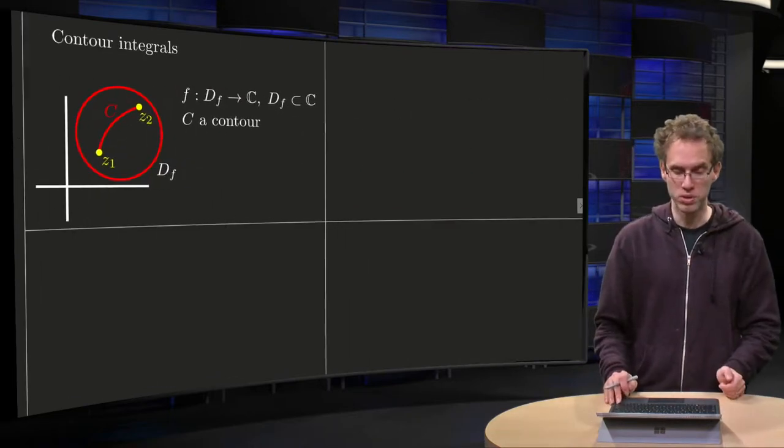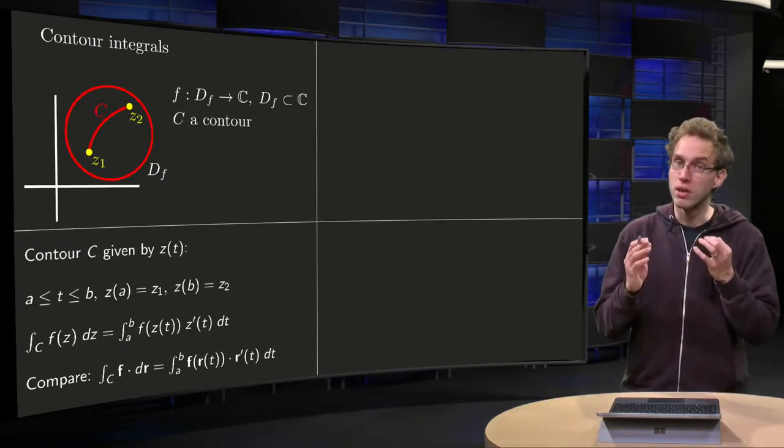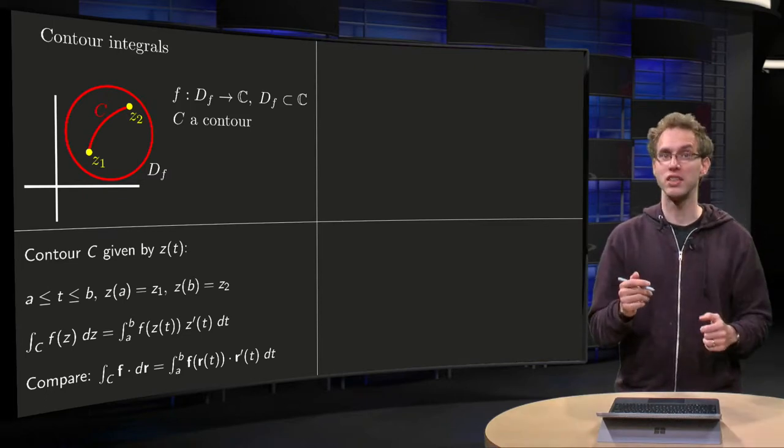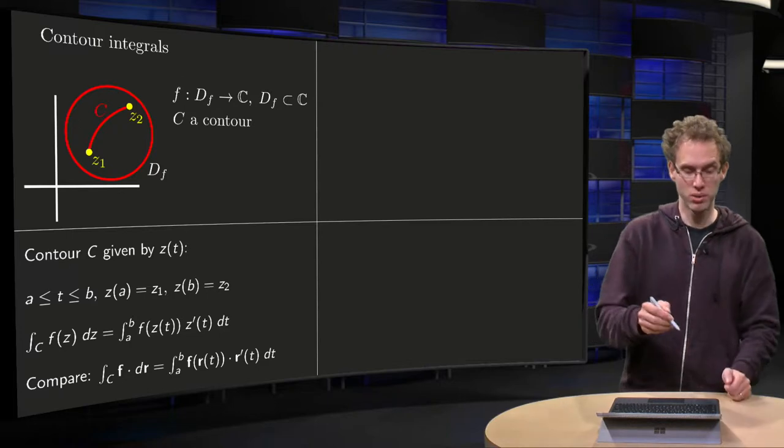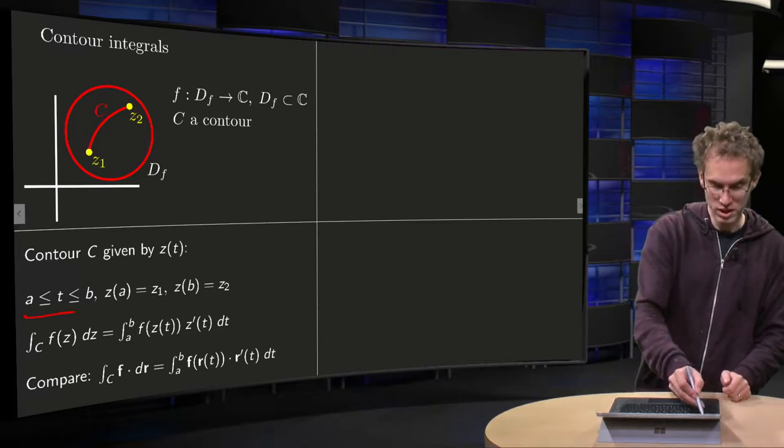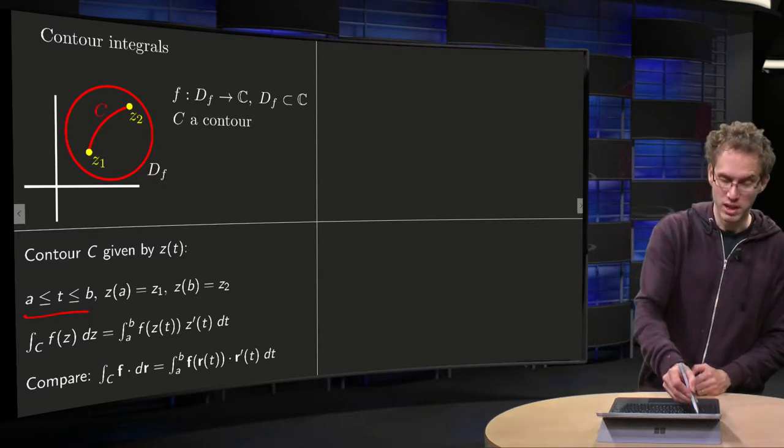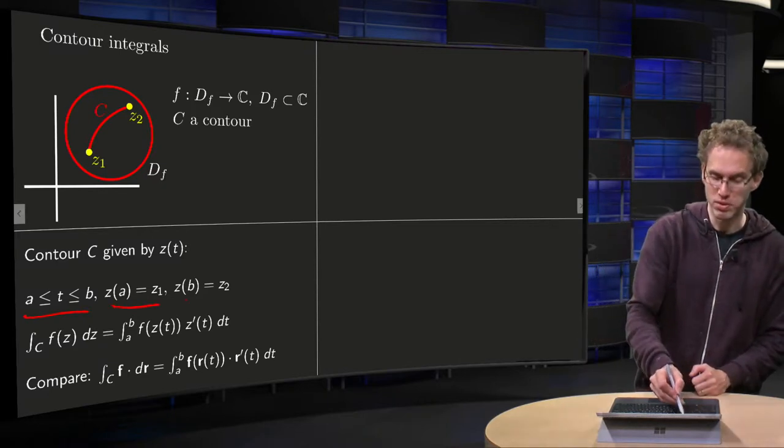So how do we compute the contour integral of f? Well, first of all we parameterize C, just as in the real case. So T is running between A and B, this real parameter such that z of A equals z1, z of B equals z2.